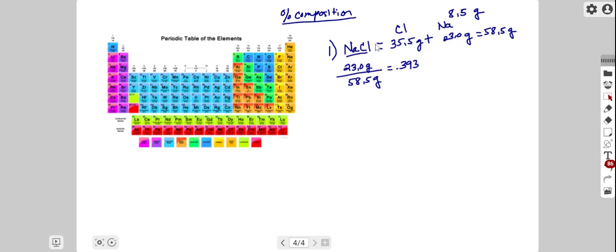Of that 58.5 grams, 23 grams is sodium. Let's express that as a percentage: 23 divided by 58.5 gives us a ratio of 0.393, or 39.3 percent of the mass of sodium chloride consists of sodium.